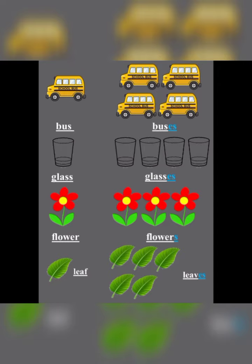Glass becomes glasses (g-l-a-ss-e-s). Then we have a picture of flower — flowers, 's' is added. Next picture is of leaf — it becomes leaves (l-e-a-v-e-s). Leaf, leaves.